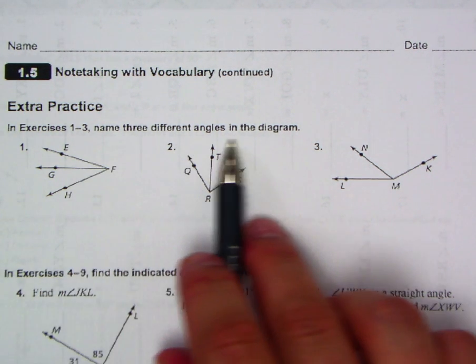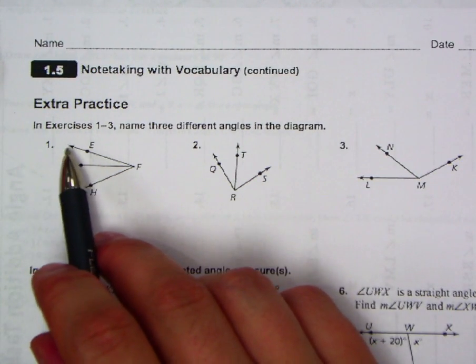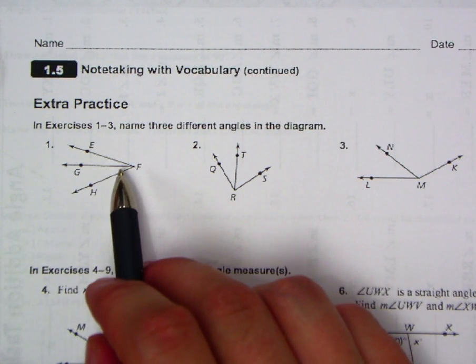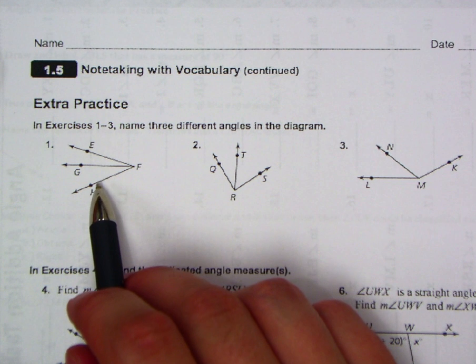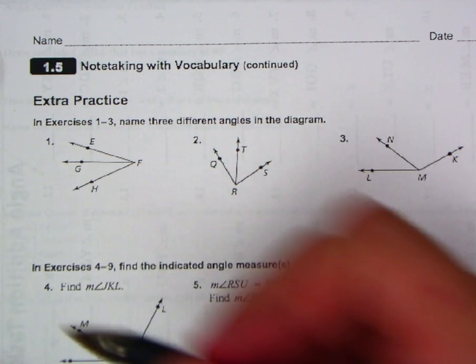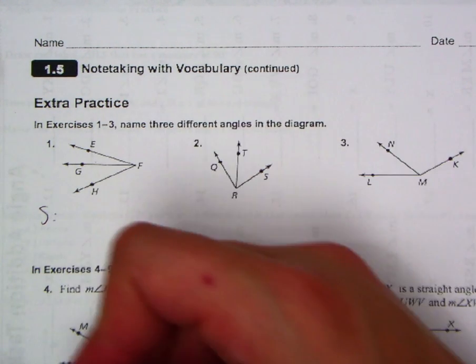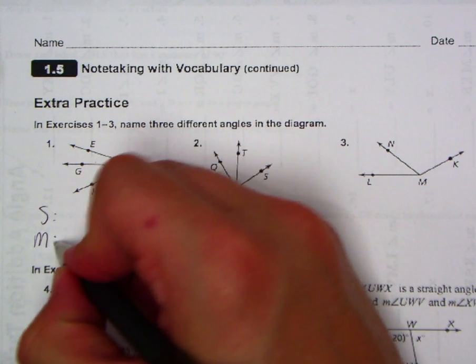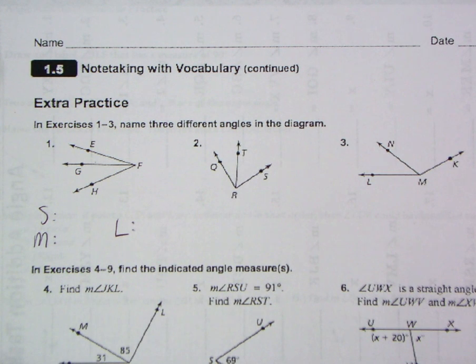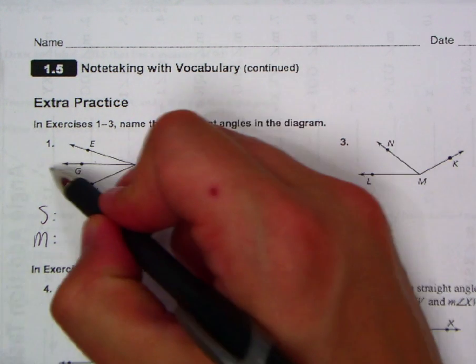All right. So, in exercises one through three, name three different angles in the diagram. Well, again, I know a lot of people see this and they just see kind of, you know, maybe two angles, the top one and the bottom one, but together they actually make a larger one. Right? So, let's name those. The small one may be on top. Let's go ahead and, I mean, just to keep track of them. We got a small, kind of a medium, and then when you combine them, we get a large. Right? So, the small is the one up top. That would be angle EFG.